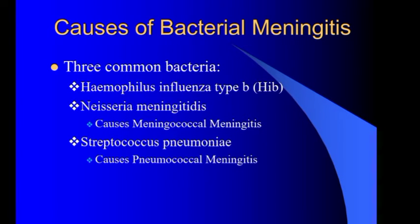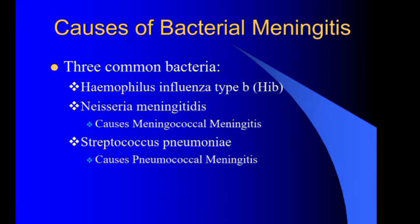Three common bacteria that cause meningitis in humans: first is Haemophilus influenzae type B; second is Neisseria meningitidis, which causes meningococcal meningitis; and the third is Streptococcus pneumoniae, a diplococci bacteria which causes pneumococcal meningitis. It is the most common cause of adult meningitis. Some other bacteria cause neonatal meningitis, which is Streptococcus agalactiae, causing both early and late neonatal meningitis.